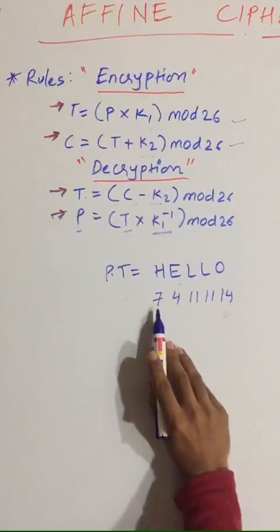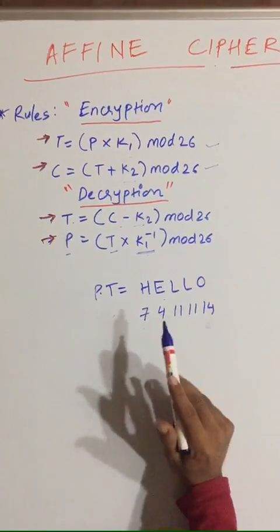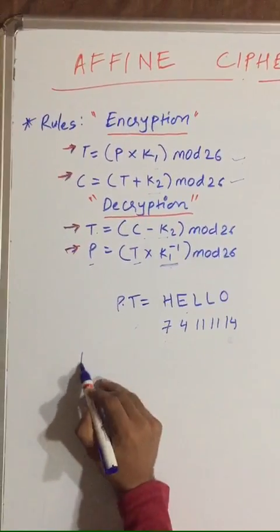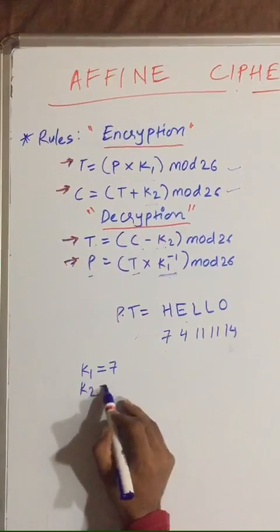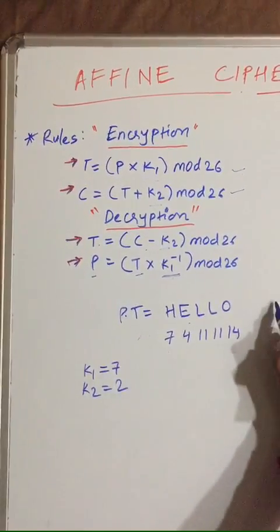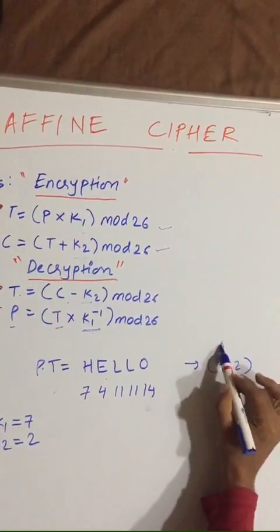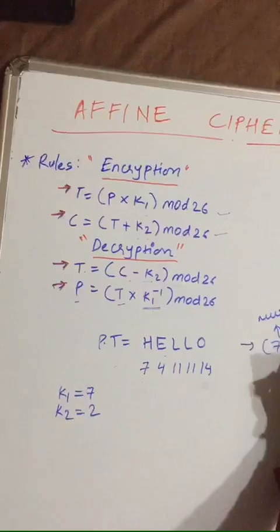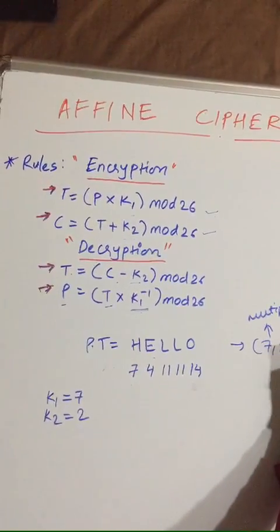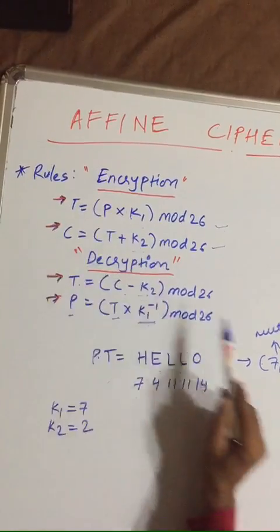You have converted HELLO into numeric values. Let's take key 1 equal to 7 and key 2 equal to 2. You have to represent in the form (7,2). This is for multiplication and this will be used for addition.